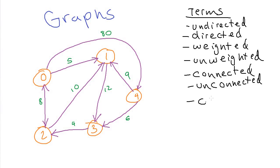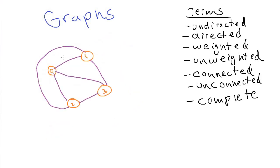We also have something called a complete graph. A complete graph is like a connected graph, except there has to be a direct path from one node to every other node. Here we have a complete graph of four nodes — there's a direct path from each node to each other node. I've done this as an undirected graph, but if it were a directed graph, there would have to be edges going in both directions between every node. So this is a complete graph because every node connects up to every other single node.